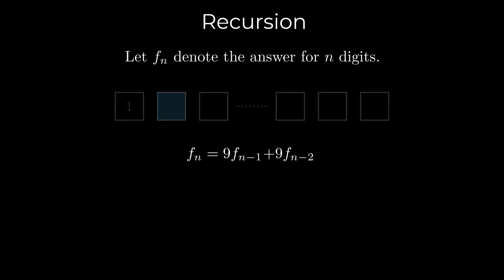Note that if we had only one digit, we could fill it with any number from 0 to 9. So f1 is 10. If we had two digits, the first digit could be any number from 0 to 9, giving us 10 choices.